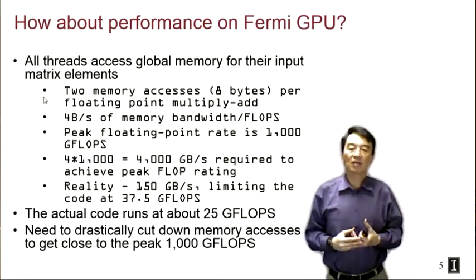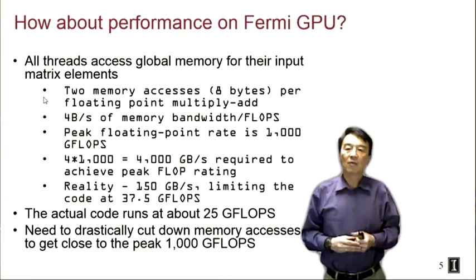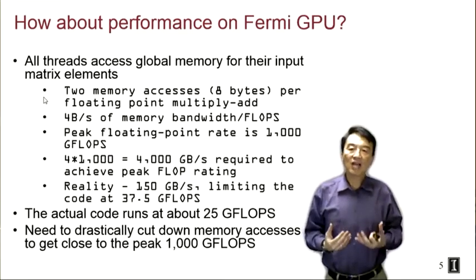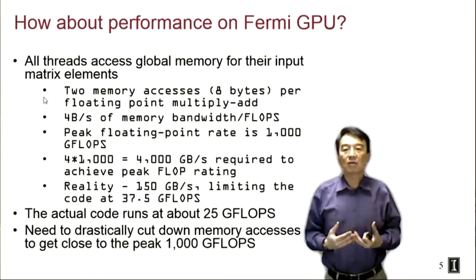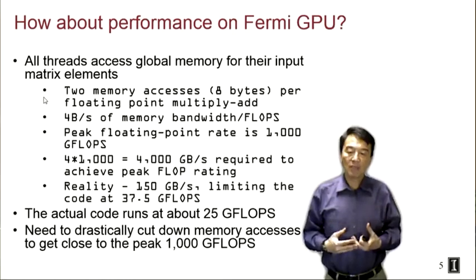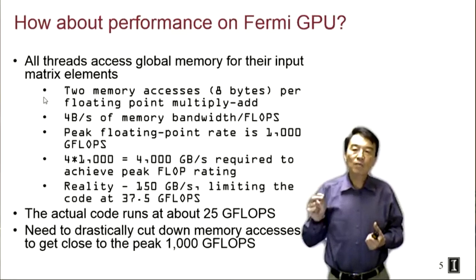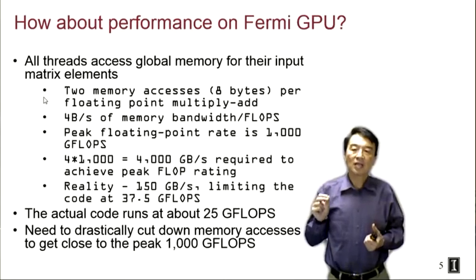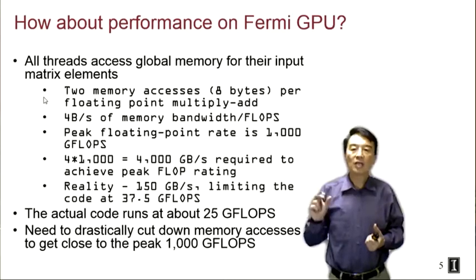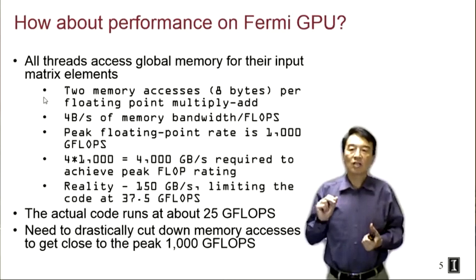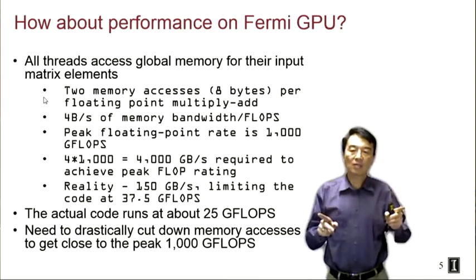If we look at the execution speed of that kernel on the Fermi GPU, we can do a simple back-of-the-envelope calculation. For that loop, we have two memory accesses — one to an A element, one to a B element — and then we do a multiplication and addition. So we're accessing two memory operands and performing two floating-point operations.